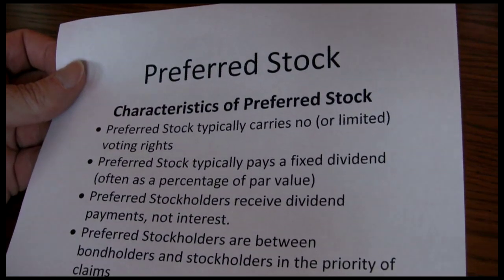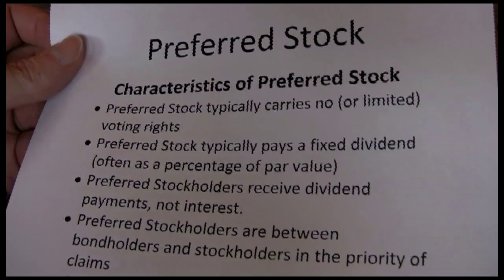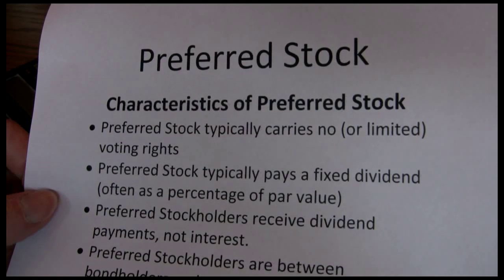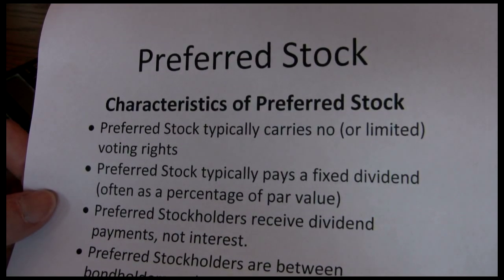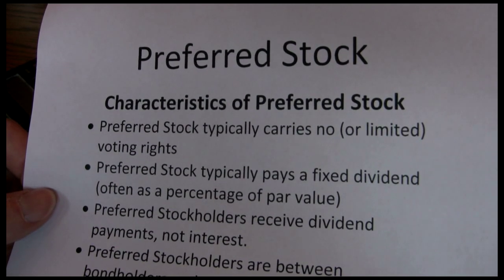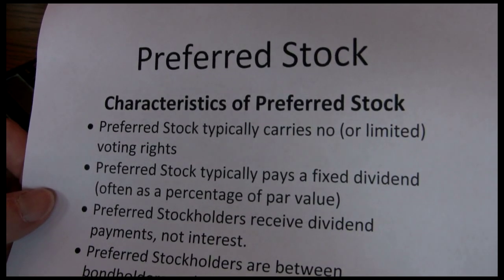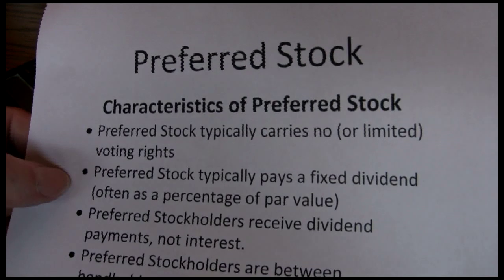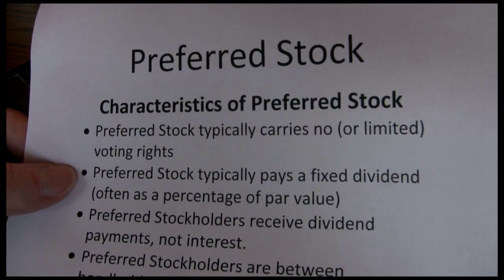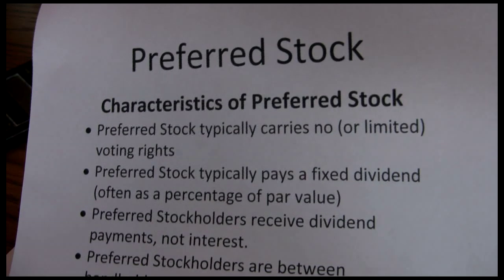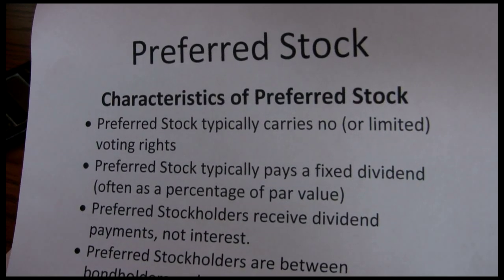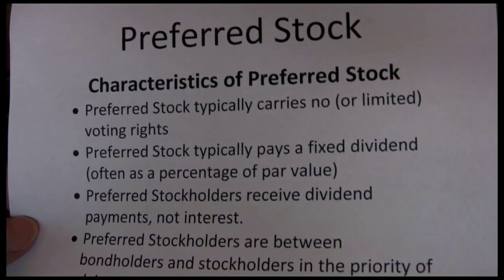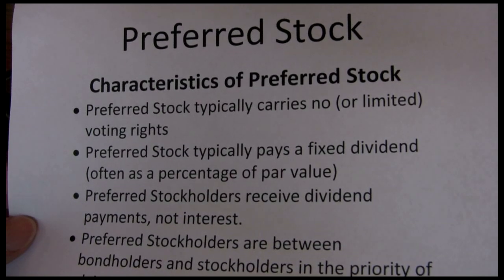Some basic characteristics. First of all, preferred stock typically carries no or limited voting rights. When you're looking at stockholders as owners of the company that vote on the board of directors, we're talking about common stock there. Preferred stock supplies capital, but they do not have the same ownership rights, such as voting rights. Preferred stock also typically pays a fixed dividend, often as a percentage of par value, so no matter if the company is just moderately successful or super successful, you're still going to get the same payoff. You don't get the upside benefits that you would with common stocks.